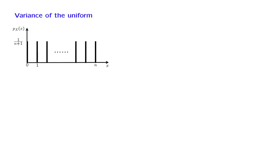Let us now calculate the variance of a uniform random variable. Let us start with a simple case where the range of the uniform random variable starts at 0 and extends up to some n. So there is a total of n plus 1 possible values, each one of them having the same probability, probability 1 over (n plus 1).